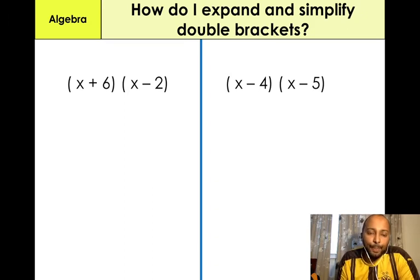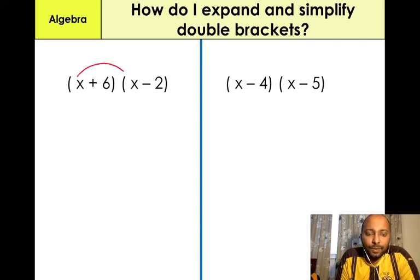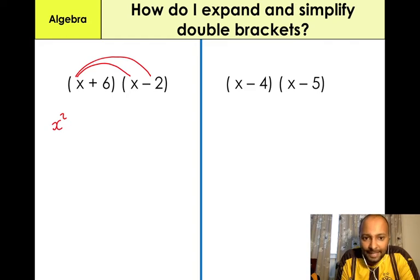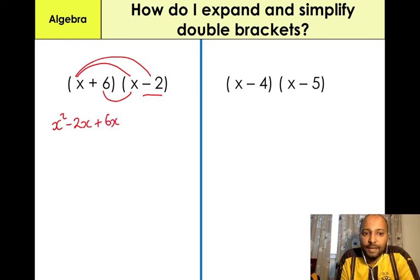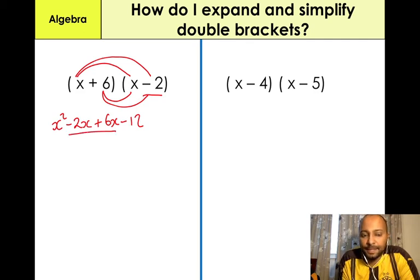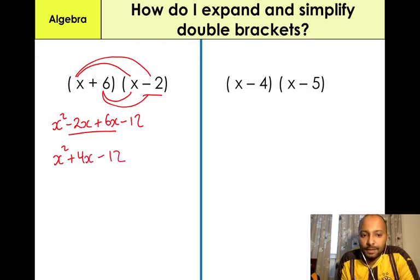Our fifth example: (x + 6)(x − 2). We need to expand the brackets using the FOIL method. X times X gives us X squared. X times negative 2 — remember, it's the negative in front of the 2 — so that's negative 2X. Then 6 times X gives us positive 6X. And 6 times minus 2, which is minus 12. Collecting like-for-like terms: minus 2X plus 6X gives us positive 4X minus 12. That's our final answer.